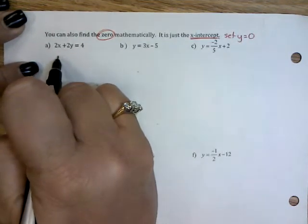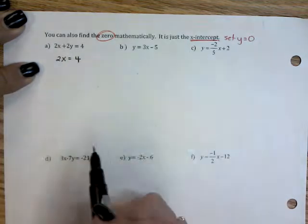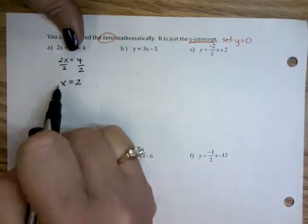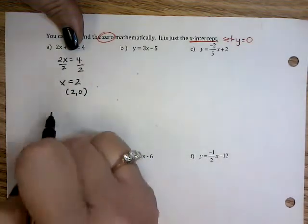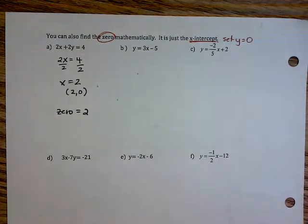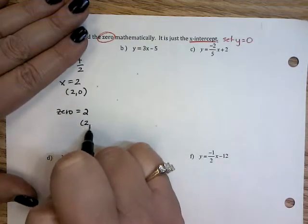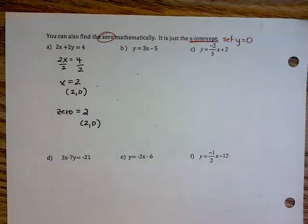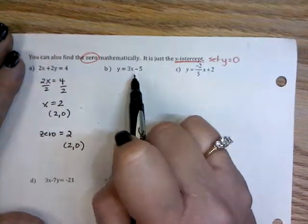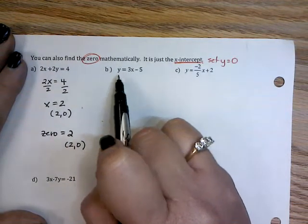That means to find my x-intercept, we set y equal to 0 and solve. On our first example, if y is 0, then 2x equals 4 because 2 times 0 is 0. So if x equals 2, for the ordered pair (2, 0) for my x-intercept, my zero equals 2. Zero can be written as a number or as an ordered pair (2, 0) because it is where it crosses the x-axis. You will see it both ways.